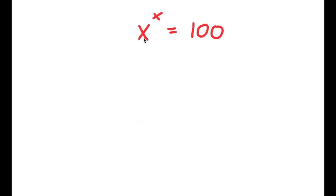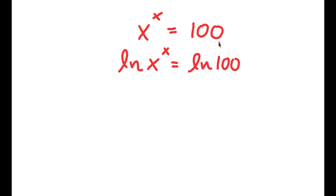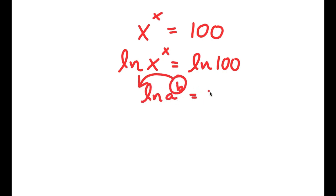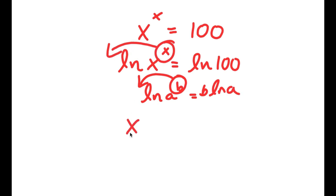In this problem, I have x to the power of x is equal to 100. I'm going to start by taking the natural log on both sides, giving ln of x to the power of x equals ln 100. Using the log power rule — ln a to the power of b equals b times ln a — I can move x to the front, giving x times ln x equals ln 100.